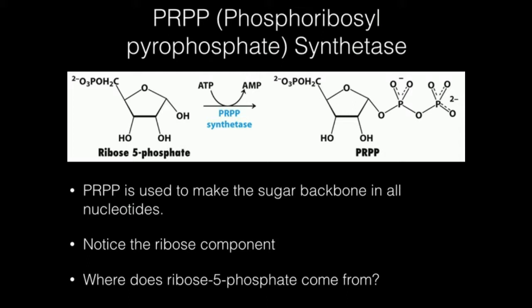Other than the fact that it is ribose 5-phosphate with a pyrophosphate group on it, you should notice another thing. If you look at this ribose ring and imagine the pyrophosphate group is not there, you should think: where do I see the nitrogenous base — the adenine, the guanine, whatever it is? Does it go down as the pyrophosphate is here, or does it go up? It's the latter. The nitrogenous base in any nucleotide — ATP, dATP, GTP, even NAD — the nitrogenous base goes up, yet this pyrophosphate goes down.